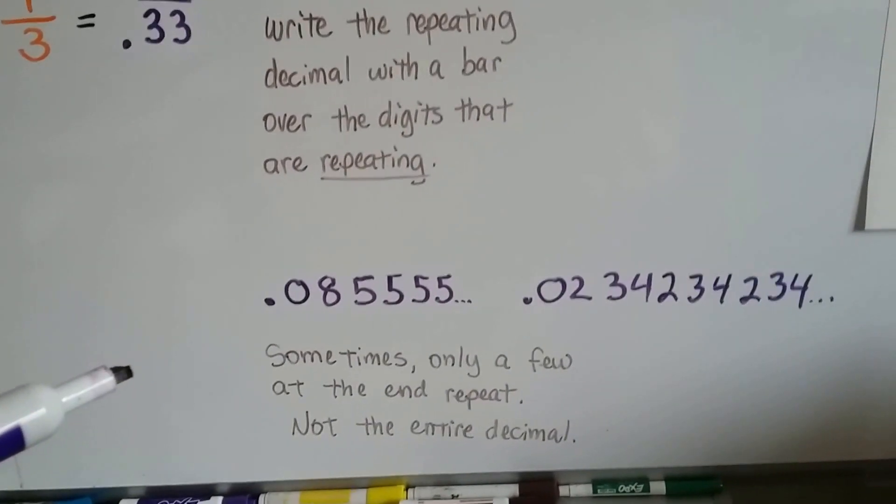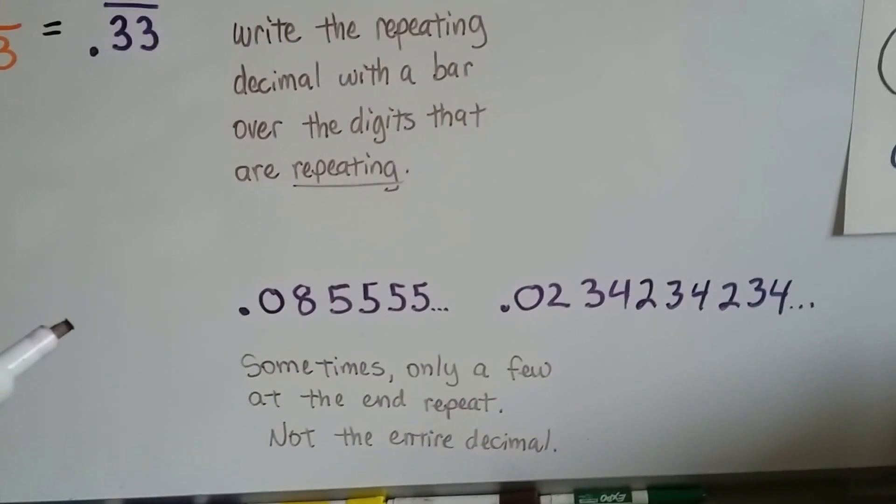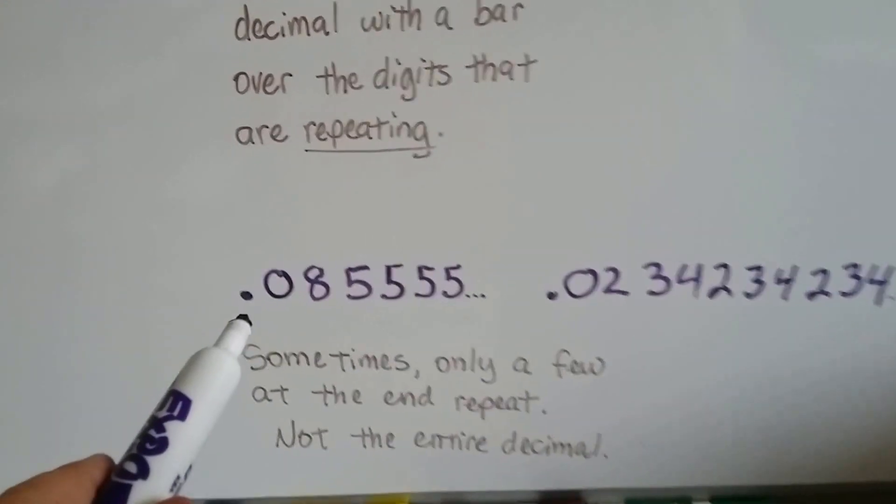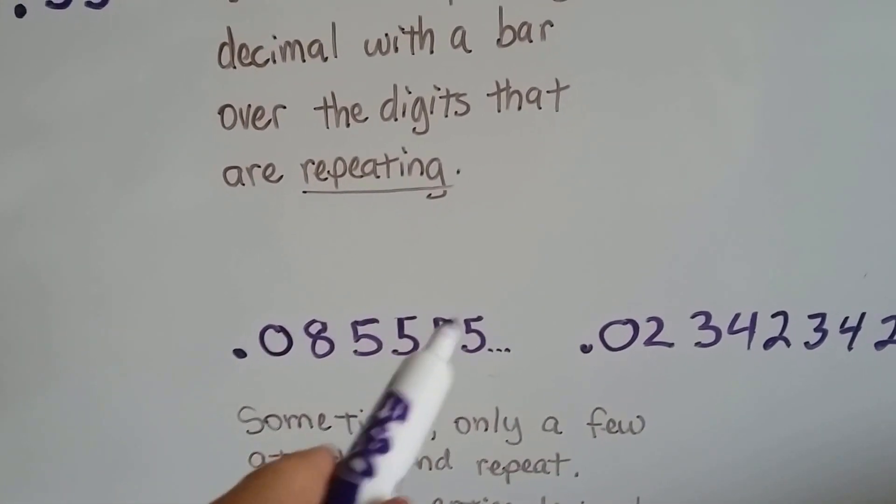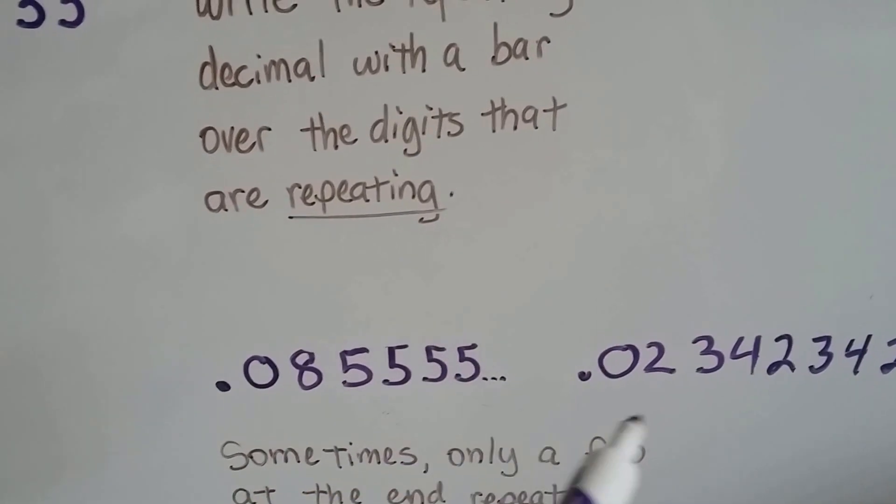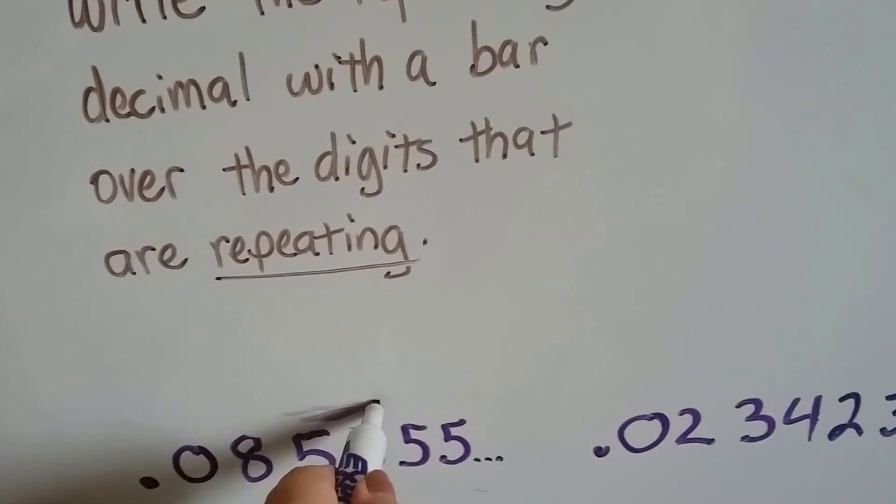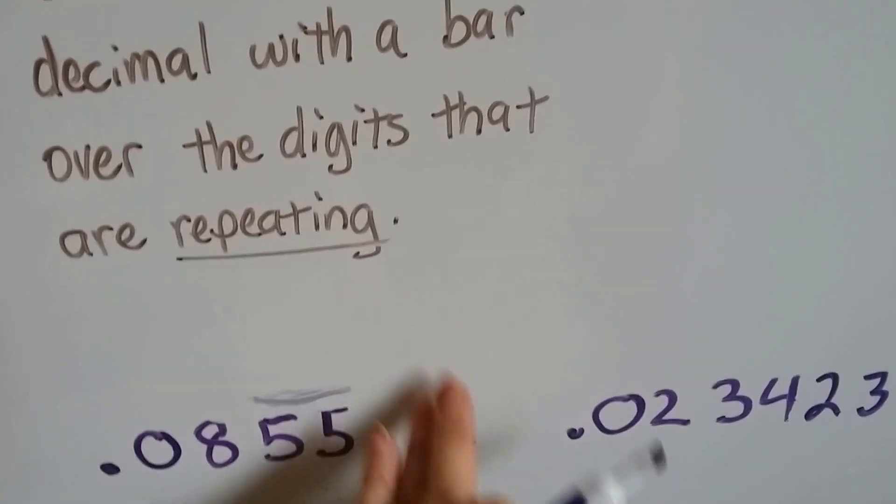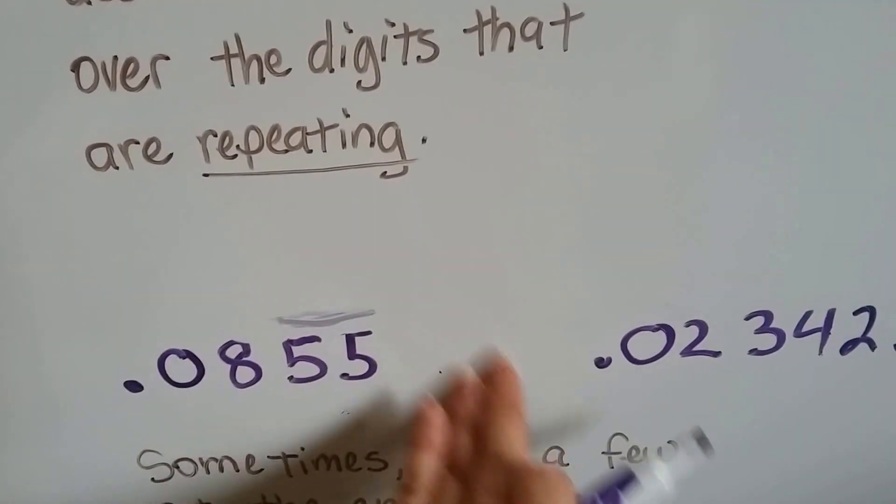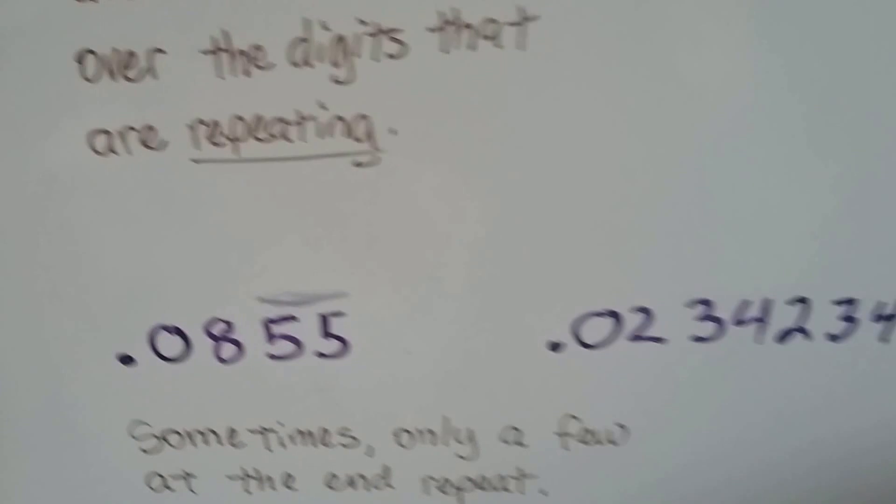Now, sometimes only a few at the end repeat, not the entire decimal. For this one, 0.085555..., the 5 goes on infinitely and just continues. So what we can do is just put a bar over the last couple of them and not write those other ones. Just put a bar over the top.